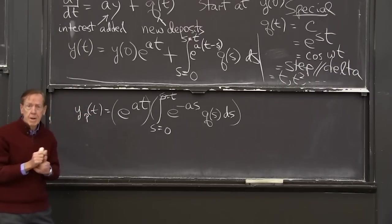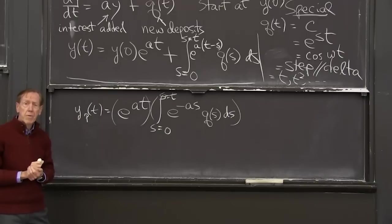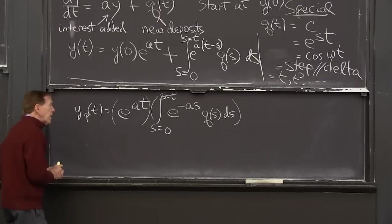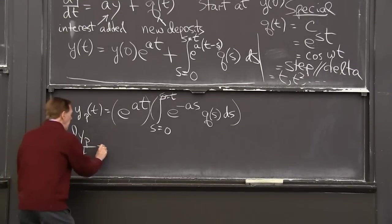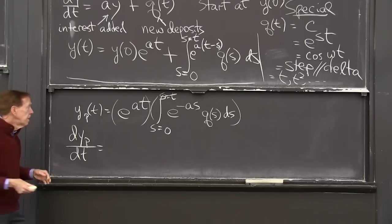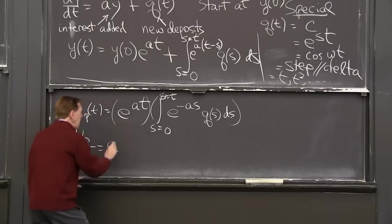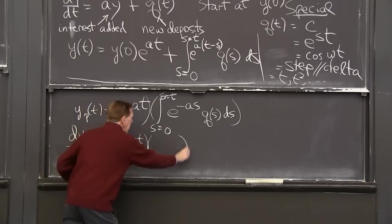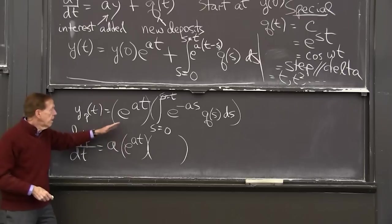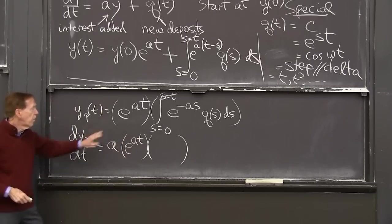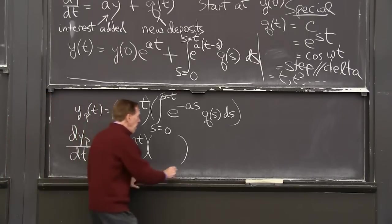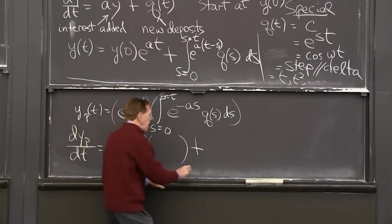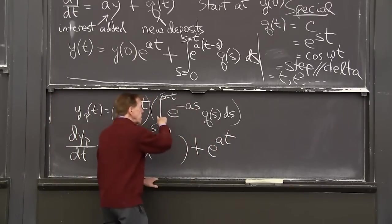So the derivative of that product will have two terms from the product rule. And those two terms will be, if all goes well, will be the two terms in the differential equation. So can I take the derivative of this by the product rule? So I take the derivative of the first thing. So now I'm computing dy dt by ordinary calculus. So the derivative of that is a e to the a t times the second term. That's just a y. That's a times the y that we had before, because the derivative of e to the a t by the chain rule brings down an a,